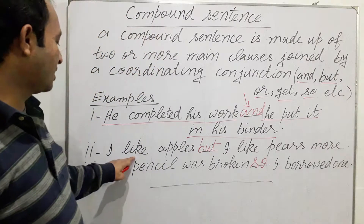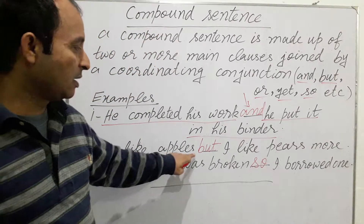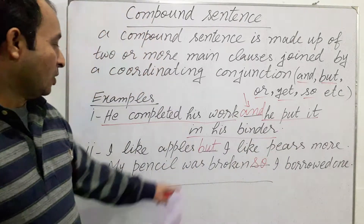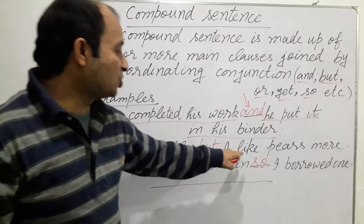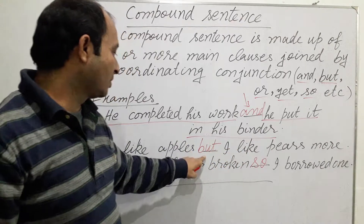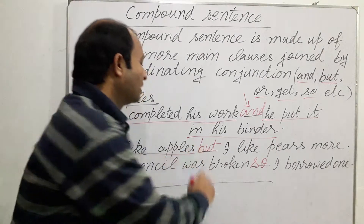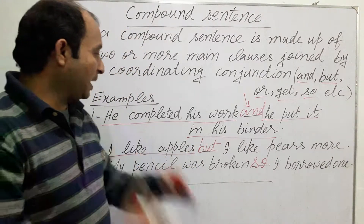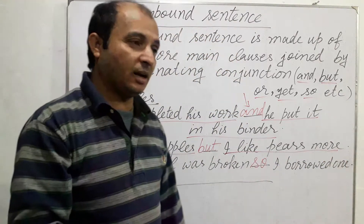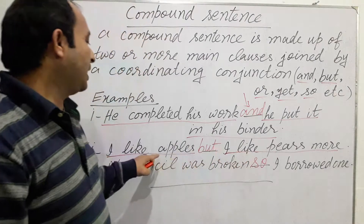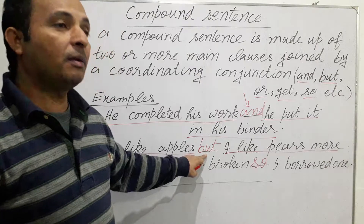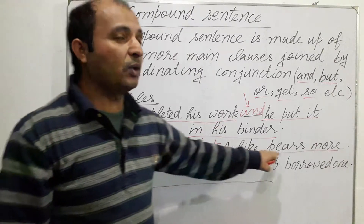Let us take another example: 'I like apples, but I like pears more.' These two main clauses are joined with the coordinating conjunction 'but'. 'I like apples' is a main clause, and 'I like pears more' is also a main clause.